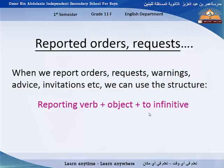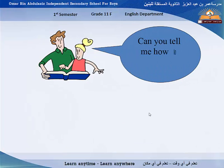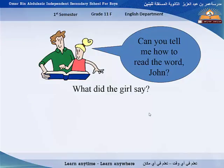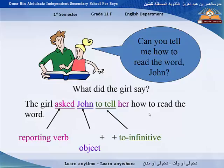When we report orders, requests, warnings, advice, invitations, etc., we use the structure: reporting verb plus object plus 'to' plus infinitive. For example: 'Can you tell me how to read the word John?' What did the girl say? The girl asked John to tell her how to read the word. Notice: reporting verb, then object, then 'to' plus infinitive.